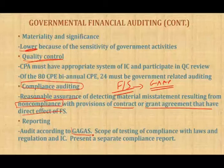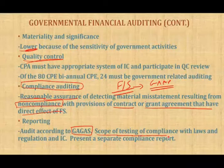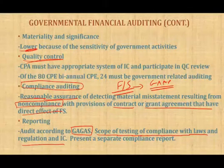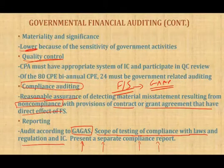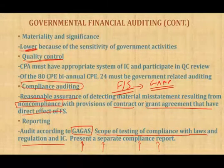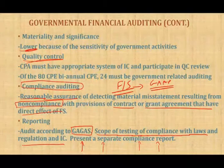Reporting: when auditing according to GAGAS, you have to state that you are reporting according to Government Auditing Standard. You must discuss the scope of testing of compliance with laws, regulations, and internal control. Importantly, you must prepare a separate compliance report in addition to the financial statement report, to tell users — citizens and federal agencies that financed the government entity — that they are in compliance.